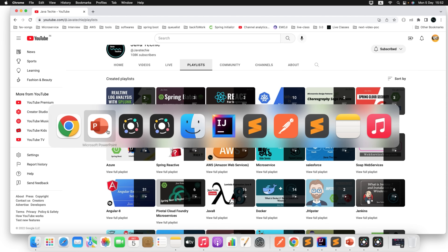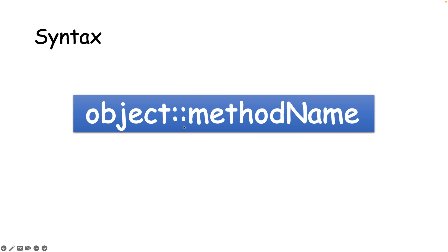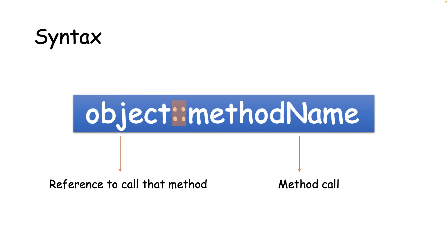I will try to break each flow, beginning from anonymous implementation to lambda expression, then convert that to method reference — so it will be easy for you to relate things in Java 8 syntax. Let's break down this syntax: we use two colons as a segregator. The right part is the method name you want to call, and the left part is the reference or instance used to call that method.